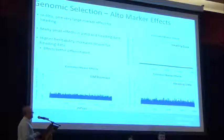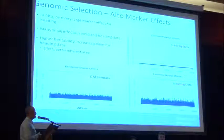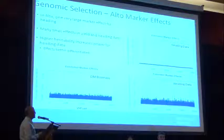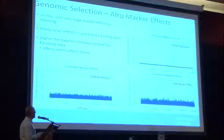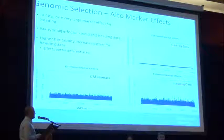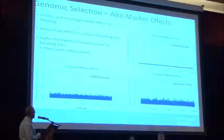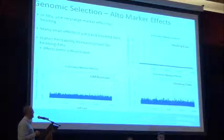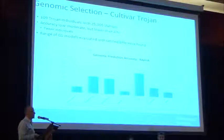A side benefit of genomic selection is you can examine marker effects to learn about genetic architecture. For heading date in cultivar Alto, there was one massive effect. When plotted on the same y-axis scale as biomass, both actually show one large effect plus many small effects. There is perhaps better differentiation in the heading date graph because higher heritability makes it easier for the models to sort out individual marker effects.